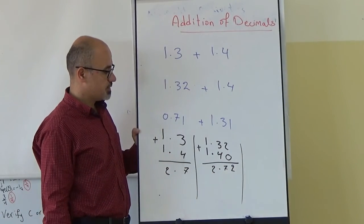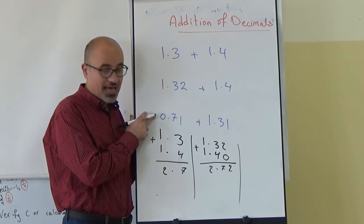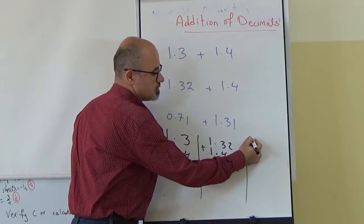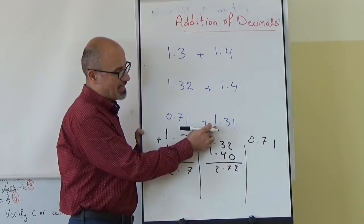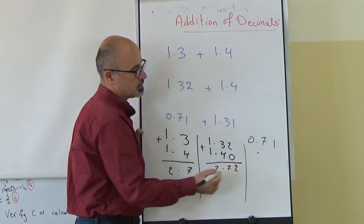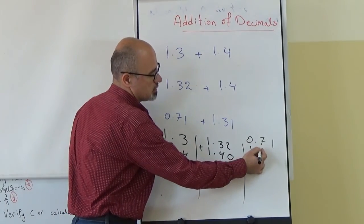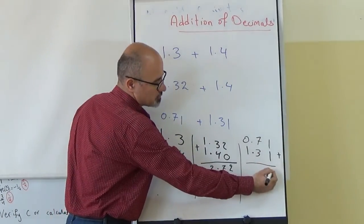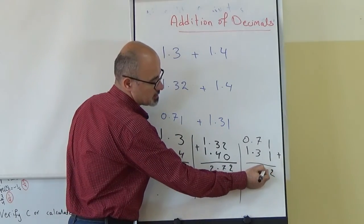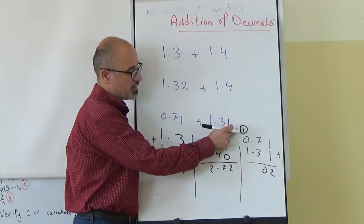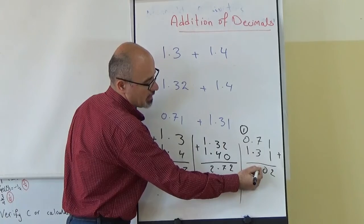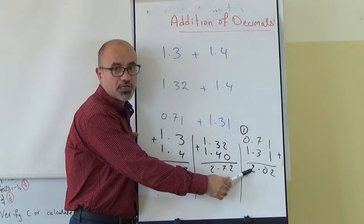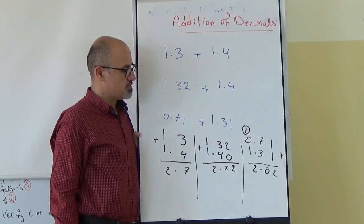For the final example, the first number was 0.71 — no complete chocolate bar, just 7 tenths and 1 hundredth. It is added to 1.31. We align: decimal point above decimal point, ones above ones, tenths with tenths, hundredths with hundredths. Adding: 1 and 1 give 2; 7 and 3 give 10, so we write 0 and carry 1; 1 added to the carried 1 plus 0 gives 2. The answer is 2.02 — 2 complete chocolate bars and 2 hundredths.